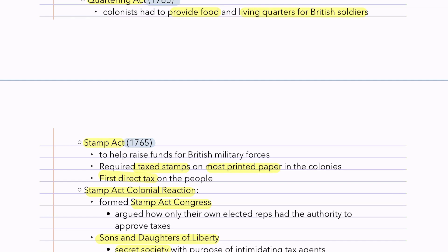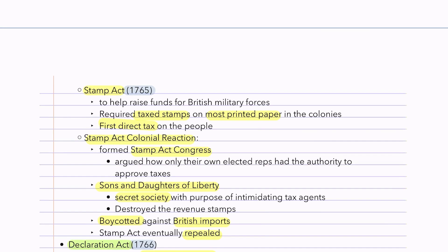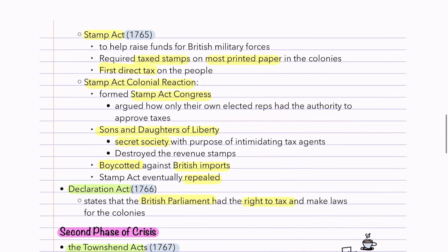The colonial reaction to the Stamp Act included a Stamp Act Congress, which argued that only the colonists' own elected representatives had the authority to approve taxes. It led to the formation of the Sons and Daughters of Liberty, a secret society with the purpose of intimidating tax agents — they tarred and feathered them and destroyed the revenue stamps. Colonists boycotted British imports, and the Stamp Act was eventually repealed, but not without consequences.